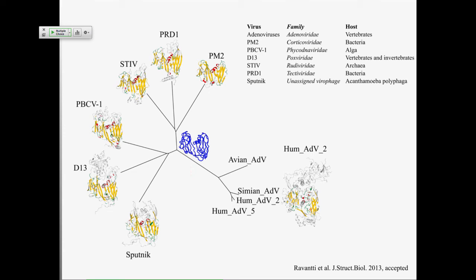Dennis Bamford and his group have been looking — completely theoretically, of course — at how viruses are related based on their structures, not so much based on their sequences. They've come up with about seven or eight major groups of viruses — not phyla or kingdoms, just groups that all seem to be related by the structures of their capsid proteins. I think this is a really useful tool to think about how some of these viruses may have arisen and also thinking about origins of viruses.